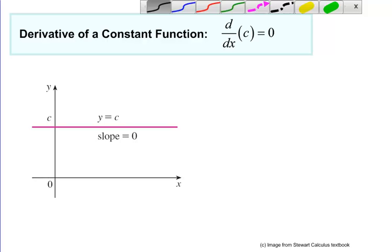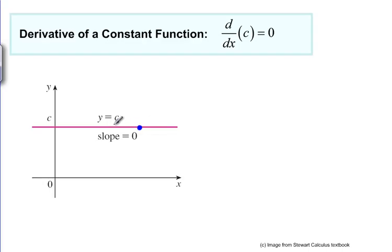For any constant function, the graph is just a horizontal line and the tangent line at any point is the same horizontal line. As you can already see, the slope of that tangent line is always going to be zero. The derivative of any constant is always going to give you zero.